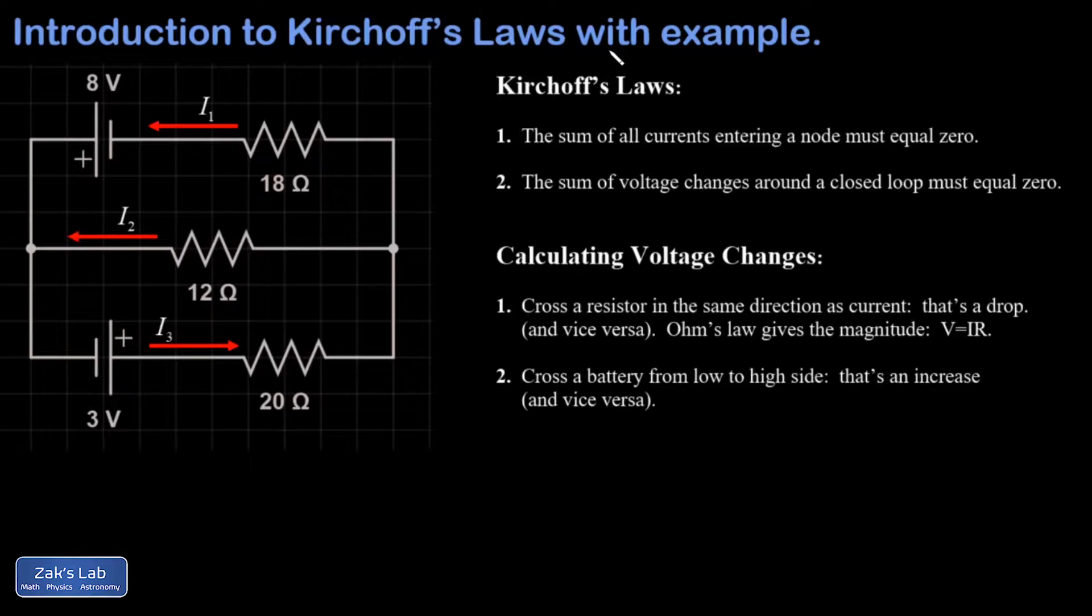The issue here is that our resistors are not in series or parallel. So the series and parallel formulas won't work for solving the circuit. Remember, series resistors need to be guaranteed to always have the same current running through them. And if you just look at the labeled currents in this circuit, you can immediately tell the resistors don't necessarily have the same current running through them.